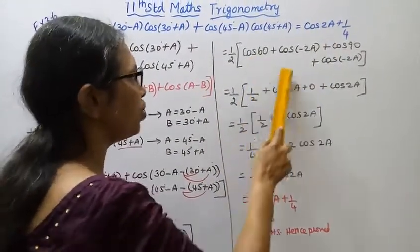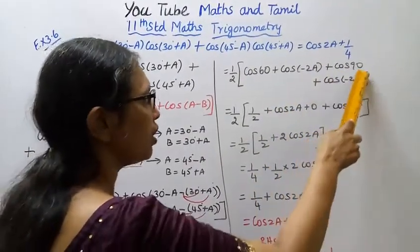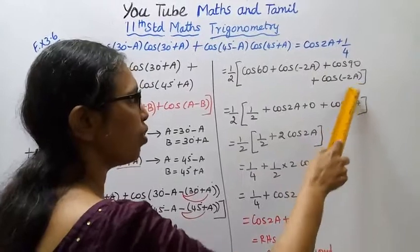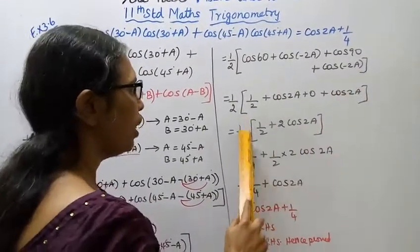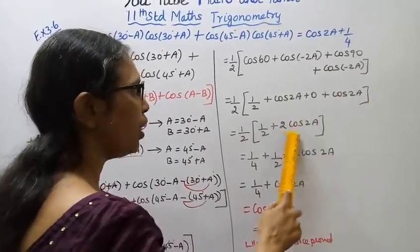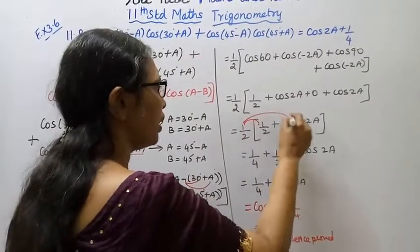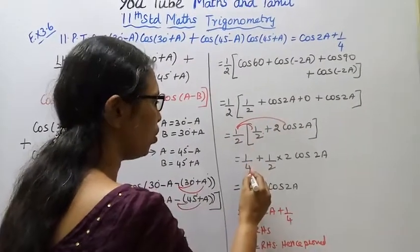Cos 60 value 1 by 2, cos minus theta is cos theta, cos 2A. Cos 90 value 0, cos minus 2A is cos 2A.